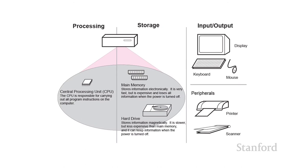We distinguish between three main categories of hardware. First, there's processing, which is primarily the central processing unit. Then there's memory, which consists of two types: primary memory and secondary memory. Primary memory is colloquially thought of as RAM, and secondary memory includes things like solid state drives, hard drives, and flash memory. The key distinction is that primary memory is volatile — if the power goes out, you lose all the information — while secondary memory is non-volatile, meaning the information survives even if you completely lose power.